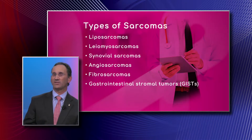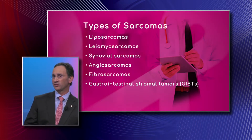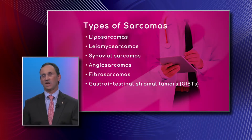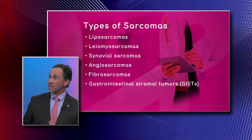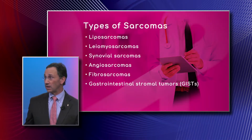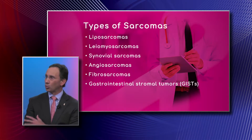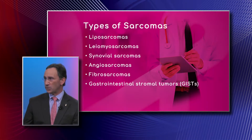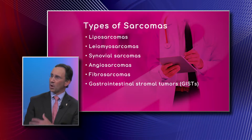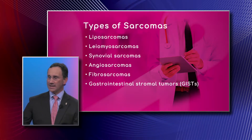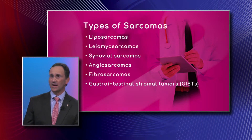Angiosarcomas are sarcomas arising from blood vessels or lymphatic channels. You can see that in the setting of having had prior radiation treatment for something else, like Hodgkin's lymphoma. But you can also see that in people who have a swollen extremity — something called lymphedema. If you have a chronically swollen extremity, whether it be the leg or the arm, that chronic swelling can lead to the formation of these angiosarcomas.